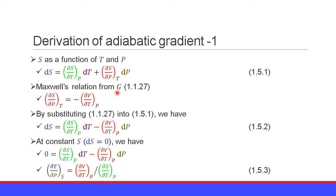We apply Maxwell's relation from the Gibbs free energy G, equation 1.1.27, which states that the partial derivative of entropy S with respect to pressure P at constant temperature T is equal to minus the partial derivative of volume V with respect to temperature T at constant pressure P.